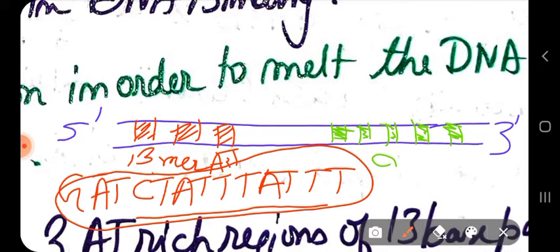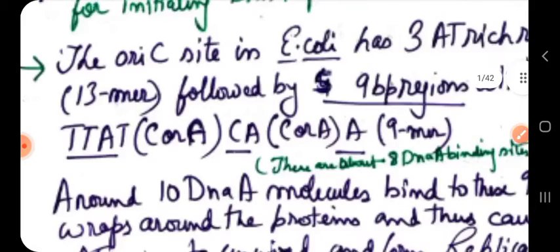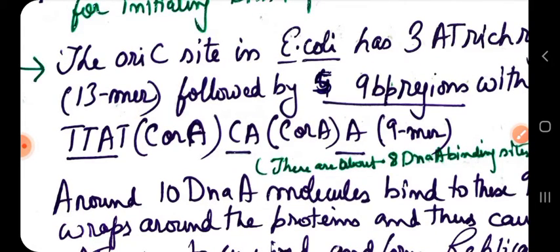These are the 9-mer regions — named so because each has a nine base pair sequence. This is the site where DnaA first binds. DnaA first binds to these 9-mer regions, and then some distortions occur — structural changes in the DNA folding — that lead to the unwinding of the 13-mer regions later on. The 9-mer regions have the sequence 5'-TTATC(C/A)(A/C)A-3'.